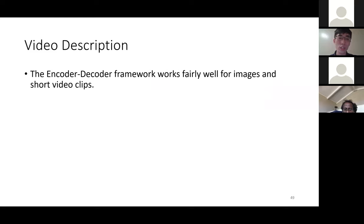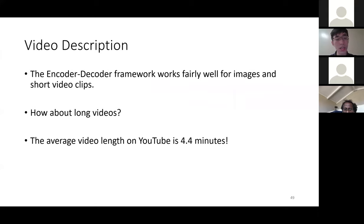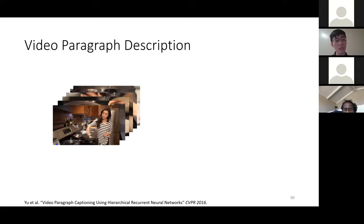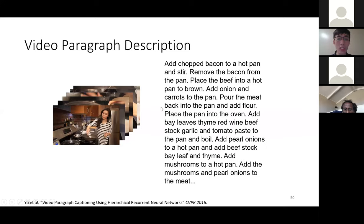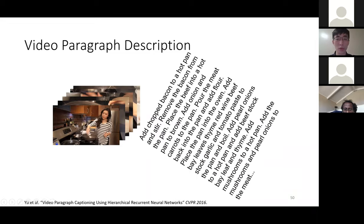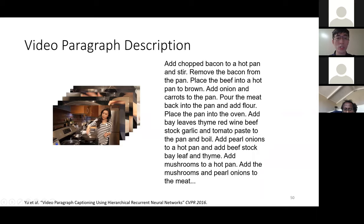Encoder-decoder frameworks work well for images and short video clips, but what about long videos? The average video duration on YouTube is over four minutes. In 2016 CVPR, Yu et al. proposed video paragraph description: given a full-length video, generate an entire paragraph with multiple sentences. However, readability is low and the association between modalities is weak — for instance, we'd want to localize the exact clip demonstrating 'how to chop bacon,' giving us temporal grounding.